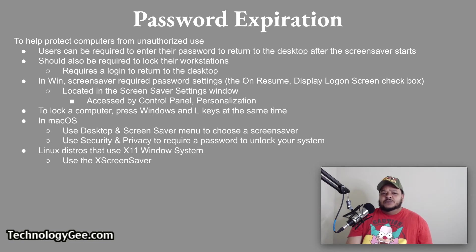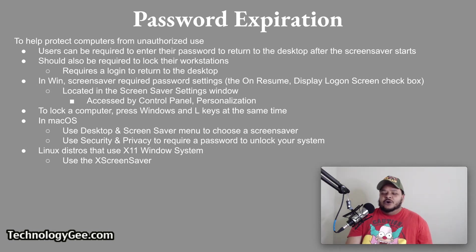Users can be required to enter their passwords to return to the desktop after the screen saver starts, and should also be required to lock their workstations. In Windows, the screen saver password setting — or the 'On resume, display logon screen' checkbox — is located in the Screen Saver Settings window, accessible from the Control Panel under Personalization. To lock a Windows computer, press Windows + L. On Mac, use the Desktop and Screen Saver menu and Security and Privacy settings to require a password. Linux distributions using the X11 window system use XScreenSaver.